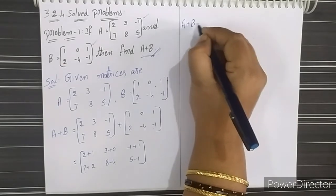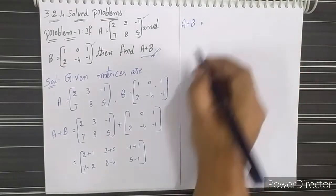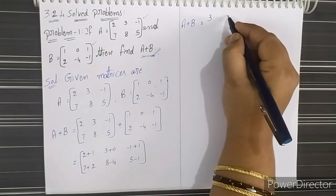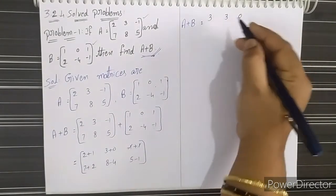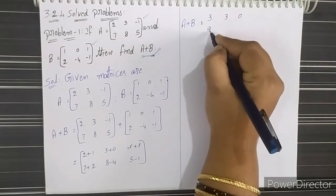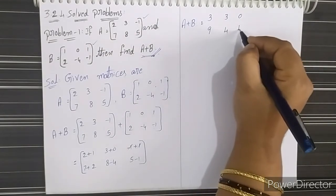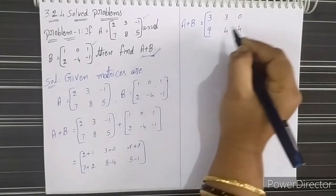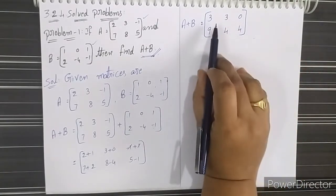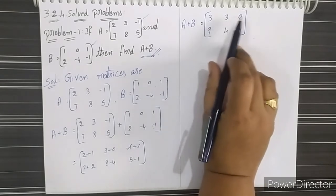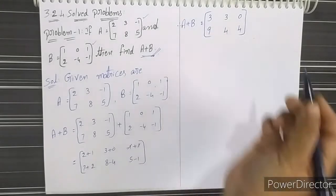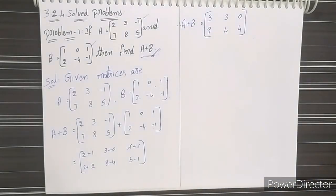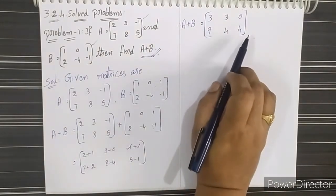Then A plus B equals: 2+1 is 3, 3+0 is 3, -1+1 cancels to 0; 7+2 is 9, 8-4 is 4, 5-1 is 4. Therefore, the addition of the two given matrices A plus B equals [3, 3, 0; 9, 4, 4].